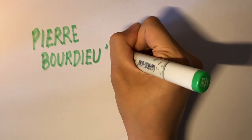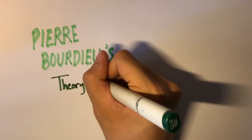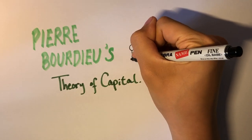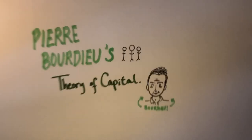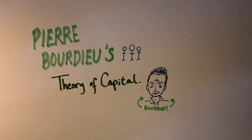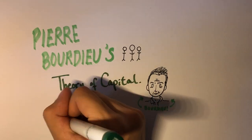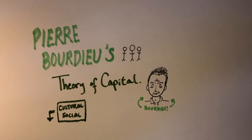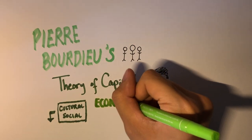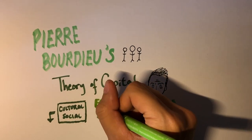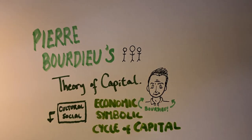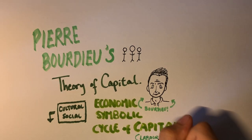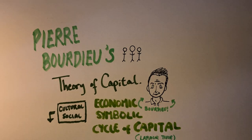Bourdieu's theory of capital attempts to explain social status and power dynamics in human societies. In our first video, we talked about Bourdieu's beginnings and the concept of cultural and social capital. If you haven't watched that yet, we recommend you watch that now via the first link in the description. In this video, we'll be talking about further concepts: mainly economic capital, symbolic capital, and the cycle of capital and labor time.